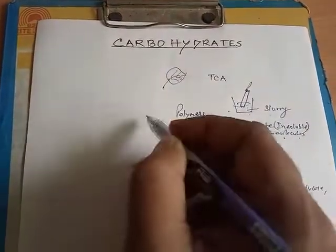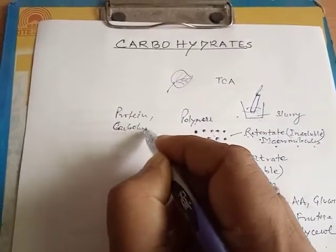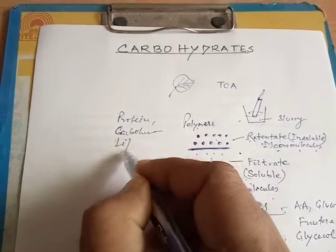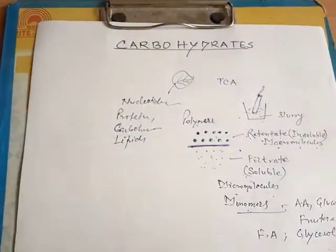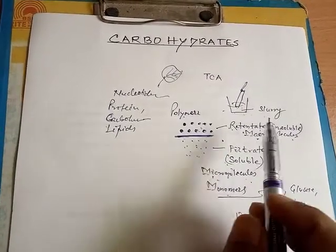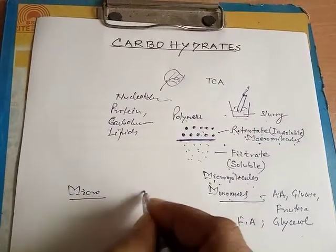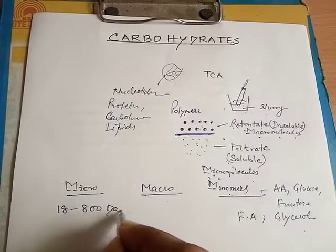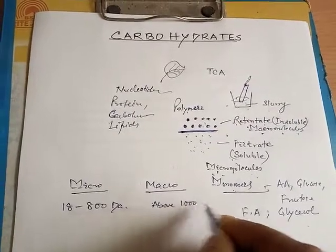For example, within the macromolecules, substances like proteins, carbohydrates, polysaccharides, lipids, nucleotides, etc. are present. We also discussed the differences between micromolecules and macromolecules: the weight of micromolecules ranges from 18 to 800 Daltons, whereas macromolecules have a weight above 1000 Daltons.